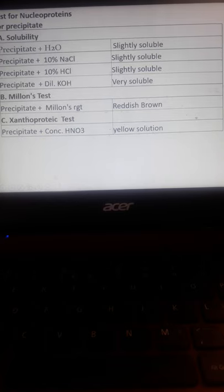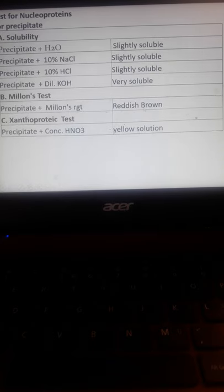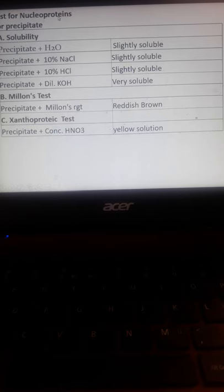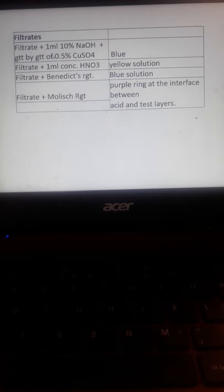Add one drop at a time of 10 percent HCl until milkiness is achieved, then filter. Test the precipitate for nucleoprotein. This is considered the preparation of nucleoprotein. For the precipitate: water is insoluble, 10 percent sodium chloride is very soluble, alkaline solution like potassium hydroxide. Millon's test gives reddish brown because of the presence of proteins, since it's nucleoproteins. Xanthoprotein test gives yellow solution. When you add nitric acid, incline and add nitric acid slowly. For the filtrate: 1 ml 10 percent sodium hydroxide, then add 0.5 percent copper sulfate. There's a blue solution for nitric acid yellow, Benedict's blue, and Molisch test gives purple ring interface between the acid and test layer. There's a junction between two layers.